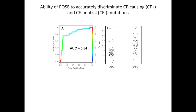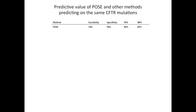here's how well the algorithm discriminates between CF-causing and CF-neutral mutations. Figure A is a ROC curve, and you can see we get a good AUC of 0.84. The strip chart in Figure B shows good separation between the CF-causing and CF-neutral predictions. This next table shows the predictive value obtained by our method on the test set mutations — namely the sensitivity, specificity,